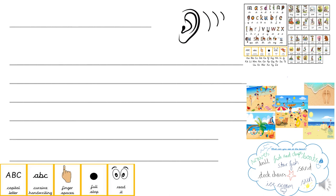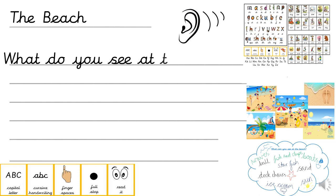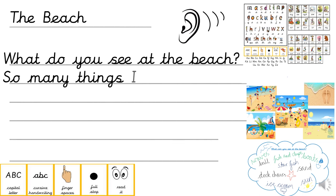Now it's time to plan the first stanza of our poem — remember we're just writing the first stanza today. We are writing a poem about the beach, so that will need to be the title. For my next two lines, I'm going to use the sentence starters from the planning sheet. 'What do you see at the beach? So many things I could screech.' Notice how those two rhyming words — beach and screech — come at the end of the lines.